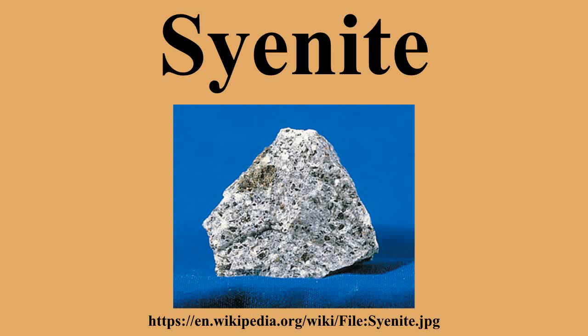The volcanic equivalent of cyanide is trachyte. The feldspar component of cyanide is predominantly alkaline in character. Plagioclase feldspars may be present in small proportions, less than 10%. Such feldspars often are interleaved as perthitic components of the rock. When ferromagnesian minerals are present in cyanide at all, they usually occur in the form of hornblende, amphibole and clinopyroxene.